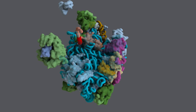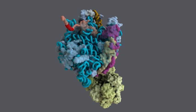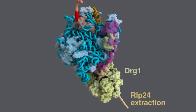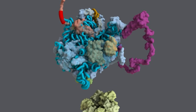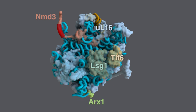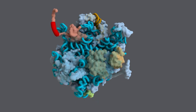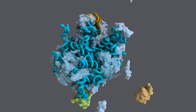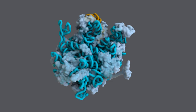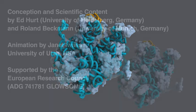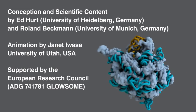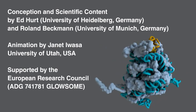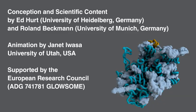In the cytoplasm, 60S biogenesis is completed through a few last maturation steps, including the extraction of various factors including RLP-24, ARX-1, NMD-3, and TIFF-6. Ribosomal UL-16 is incorporated at this stage, which completes the construction of the peptidyl transferase center. Finally, the mature 60S subunit is ready to join with a 40S subunit during translation.